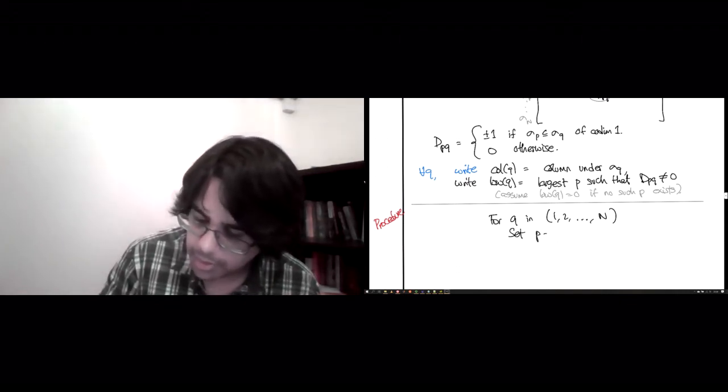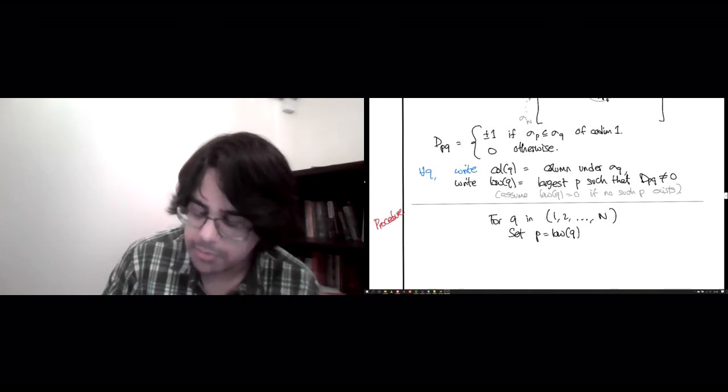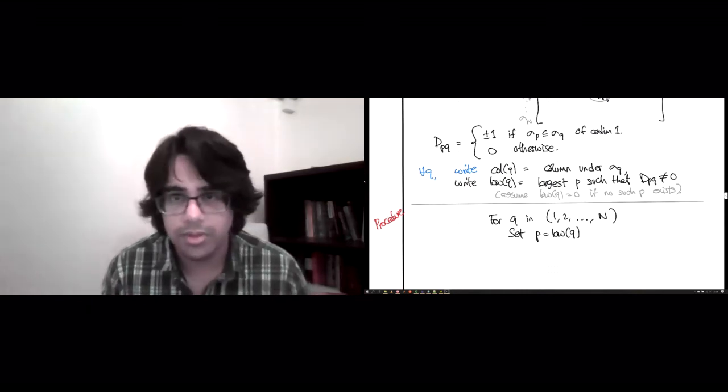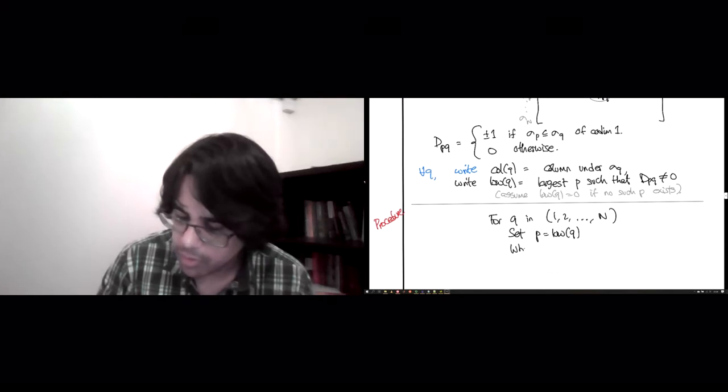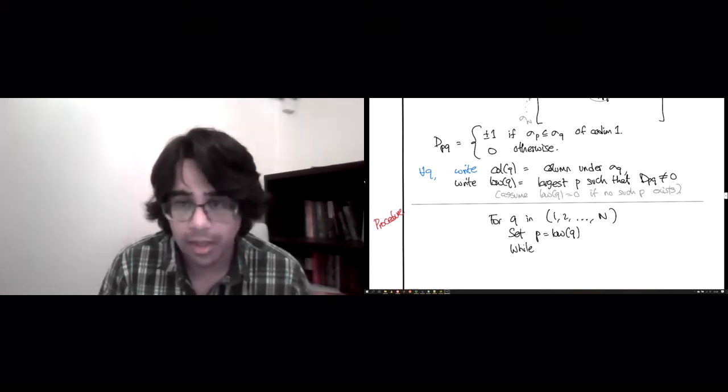You set P to be the low of Q. And remember that this P could be 0 if the column of Q was all 0s. And now what you want to do is, in case this was non-zero,